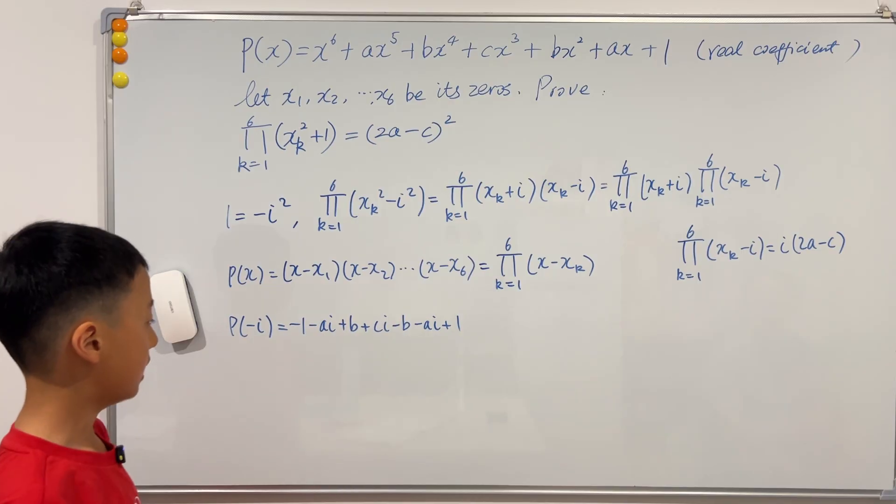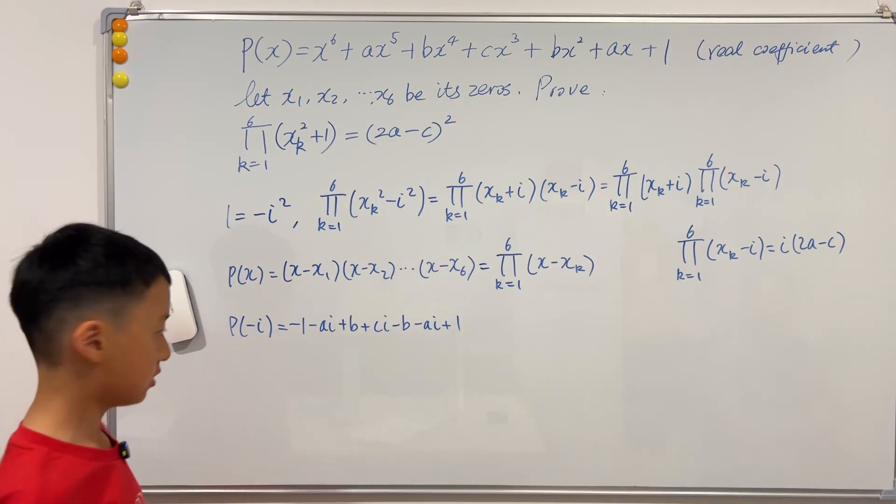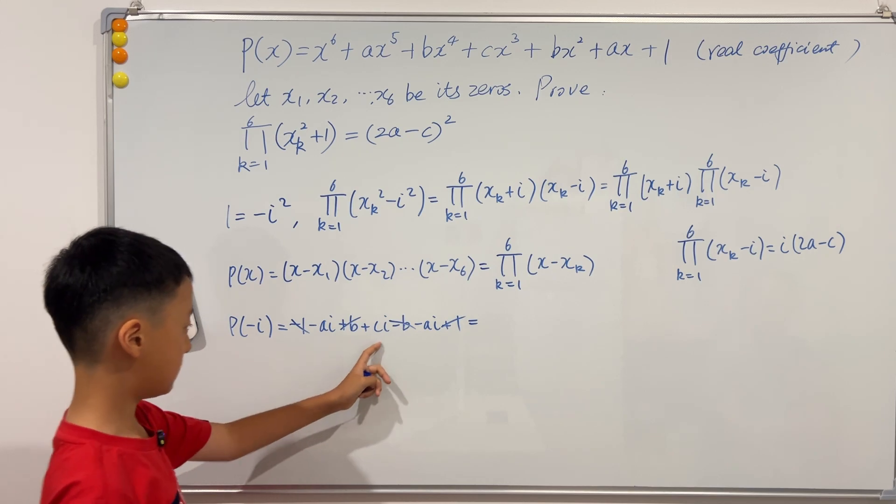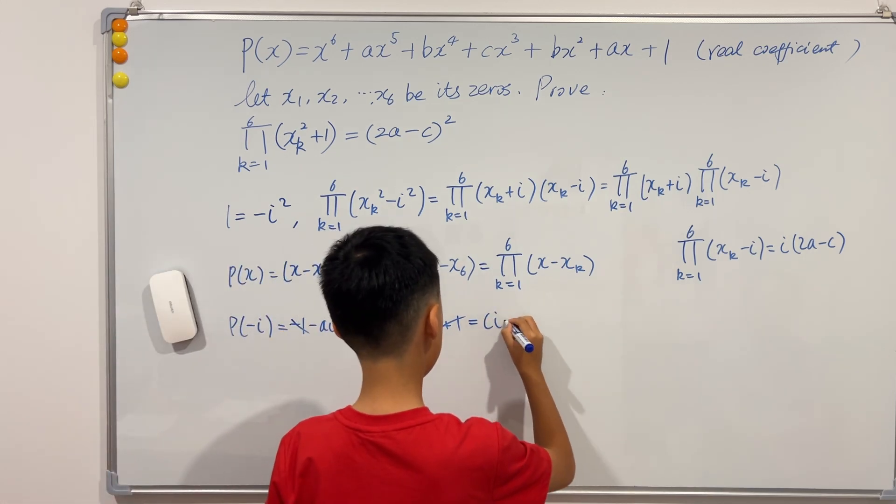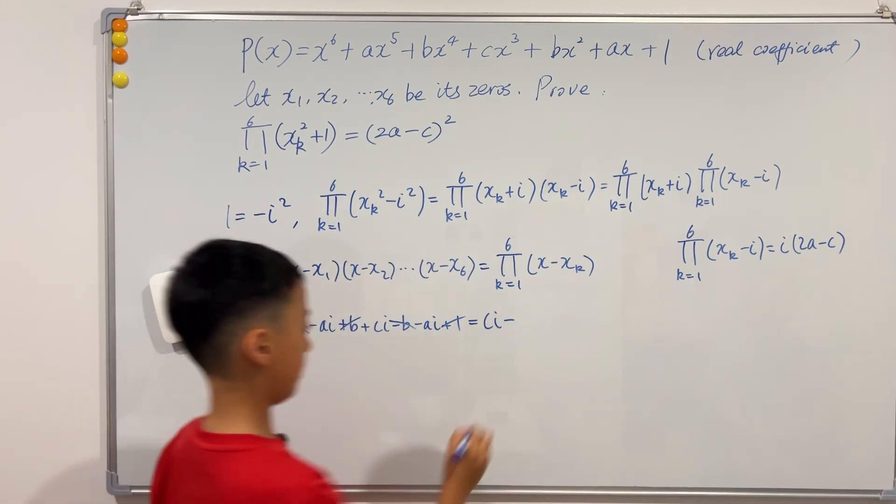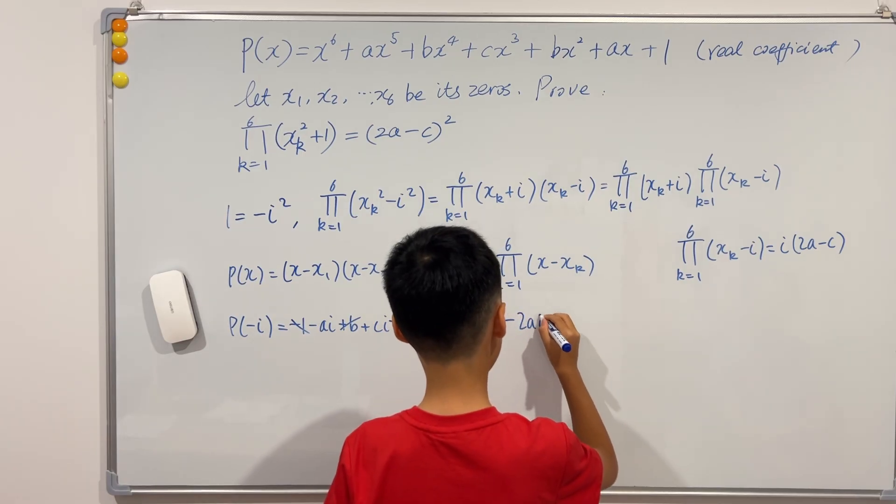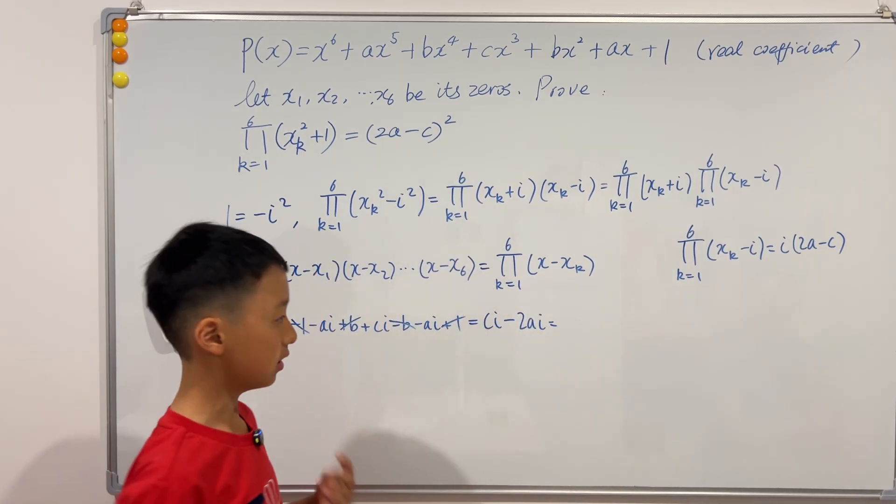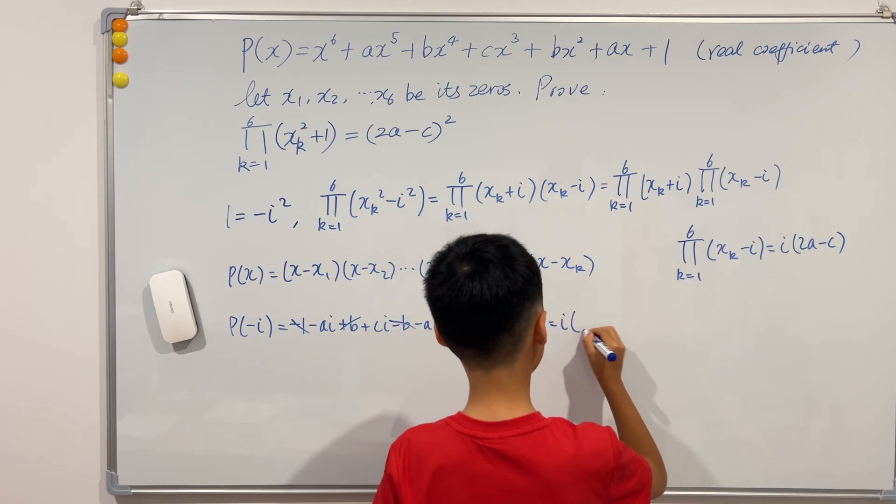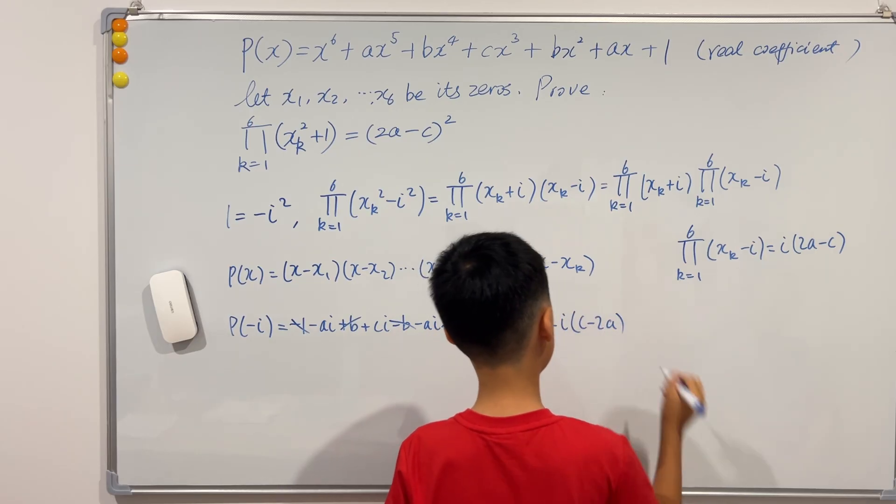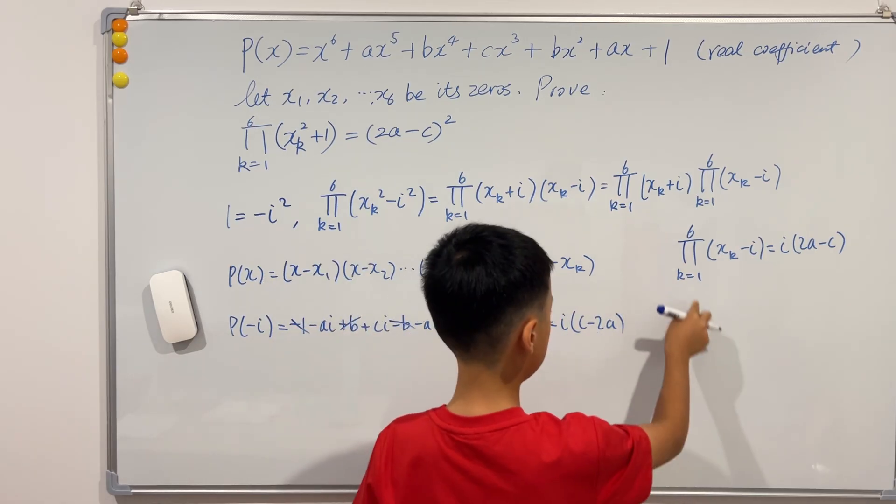And now if we cancel and collect like terms, then it will just be ci minus 2 ai. And if we factor out the i again, it will be i times c minus 2a. So now if I write this here again.